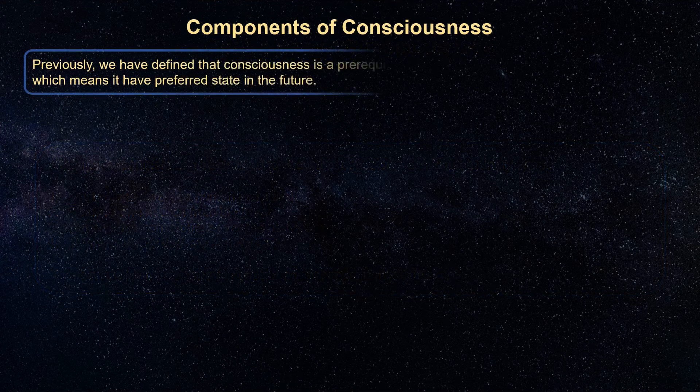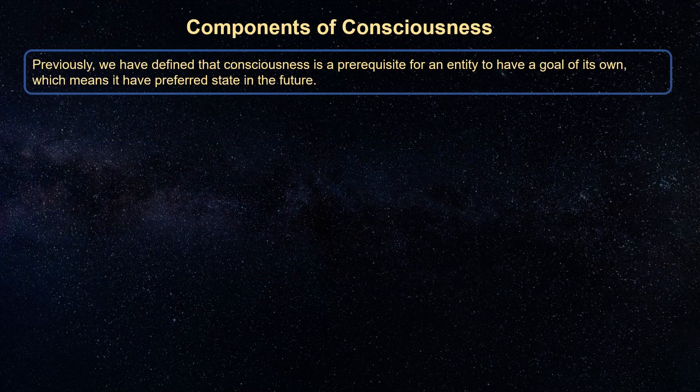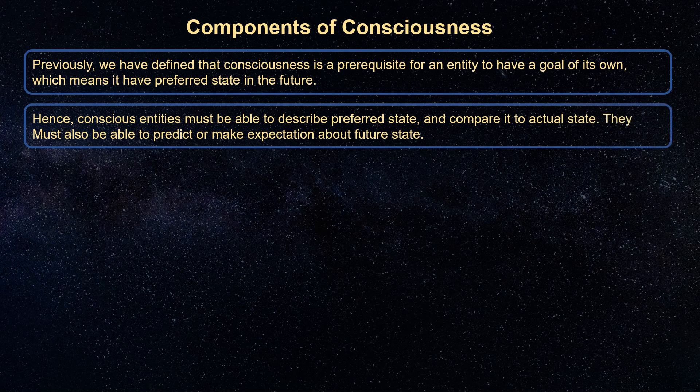Previously, we have defined that consciousness is a prerequisite for an entity to have a goal of its own, which means it has a preferred state in the future. Hence, conscious entities must be able to describe a preferred state and compare it to the actual state. They must also be able to predict or make expectations about future state.